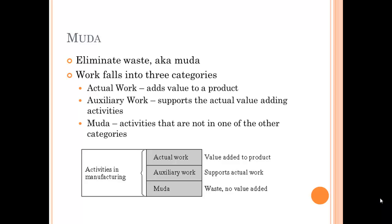LEAN focuses on eliminating waste, and the word used in LEAN for that is muda. We want to eliminate muda, which falls into three categories: actual work, auxiliary work, and waste. Actual work actually adds value to the product — it's something your customer wants. Auxiliary work supports the actual value-added activities, things like loading and unloading a part. Waste is anything else — for example, doing something to a part that the customer has no desire for, just because you've always made it that way. The customer doesn't care about it, so you shouldn't be doing it. It's all about adding value to the product.